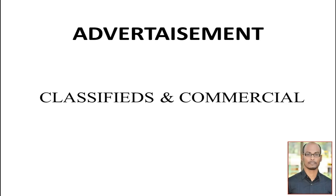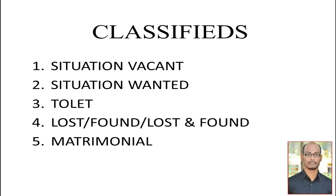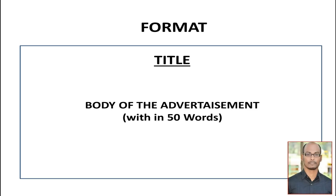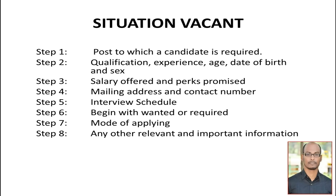Now we will go to advertisements. There are two kinds: classifieds and commercials. We are going to take only classifieds. Under classifieds, there are five different kinds: situation vacant, situation wanted, to let, lost and found, and matrimonial advertisements. The format is simple — write the title indicating what kind of advertisement it is, and the body must be within 50 words. For situation vacant, you need: the post required, qualification, experience, age, date of birth and gender, salary offered and perks promised, mailing address and contact number, interview schedule, begin with 'Wanted' or 'Required', mode of applying, and any other relevant information.